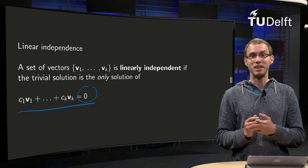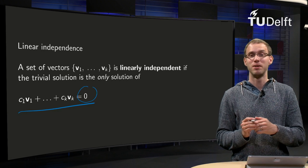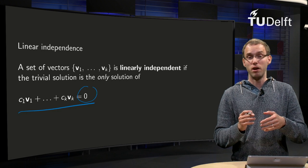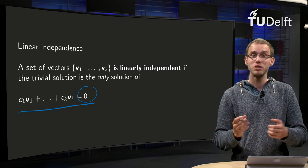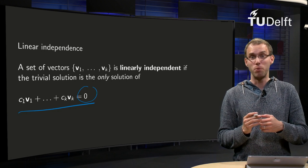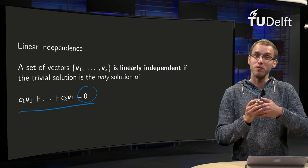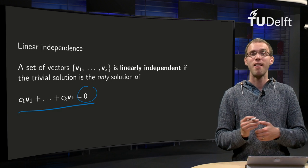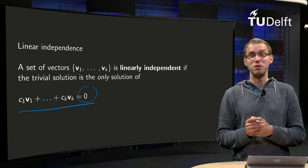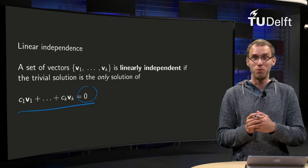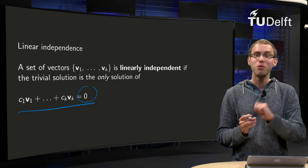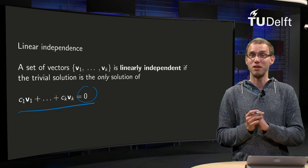This zero in the case of vectors in Rn would be the zero vector. If we have as a vector space our polynomials, then this zero is the zero polynomial, so the polynomial which is zero for all t. And if we would be dealing with matrices, then this zero would be the zero matrix. So be careful with the zero on the right hand side over there.